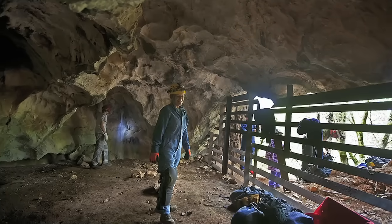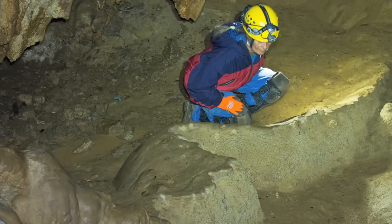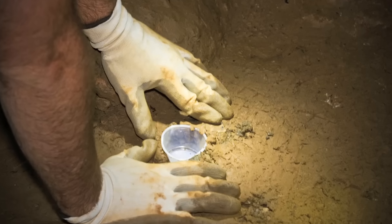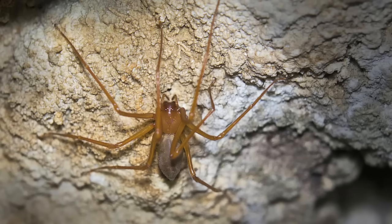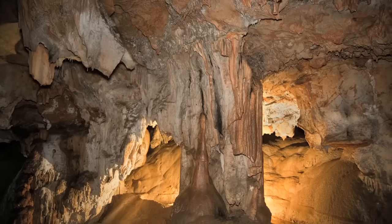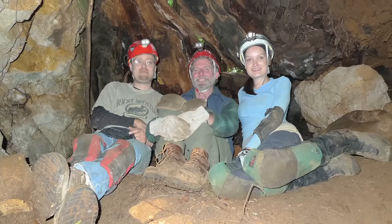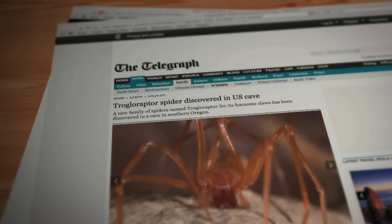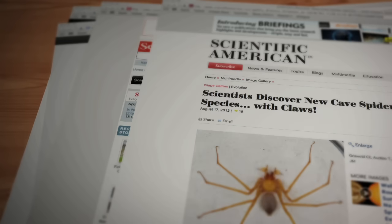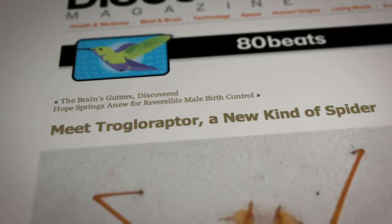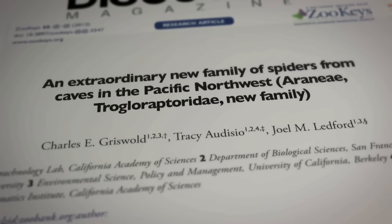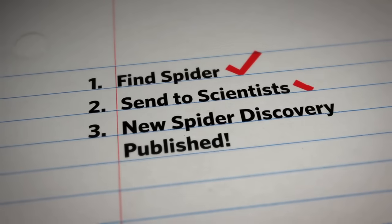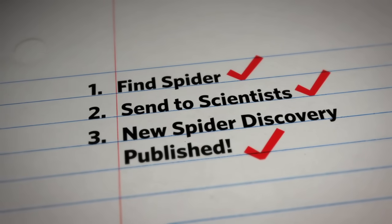A couple years ago, a group of citizen scientists from the Western Cave Conservancy discovered a large, odd-looking spider in a cave in southern Oregon. They sent it to scientists in California. Recently those scientists declared that spider a new species, trogoraptor, and a member of a new family of spiders. Sounds straightforward, right? Wrong.